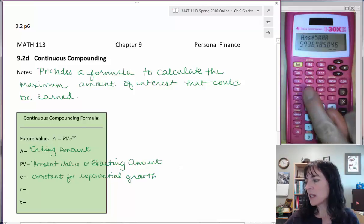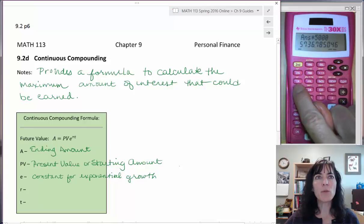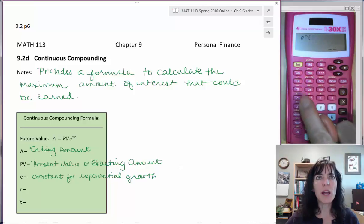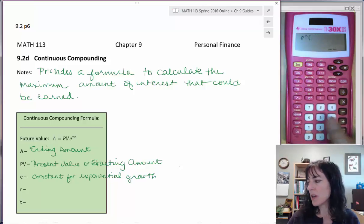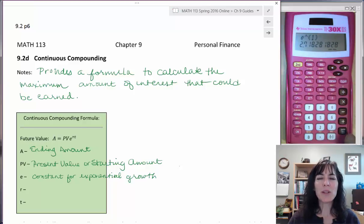On this calculator, I do the second key and then this LN button, which is the natural log. So we'll push that and we should have e to the, and then we'll just give it the exponent of 1 so that we can find out the value of e. And there you can see the value of e is 2.71828 and it goes on.